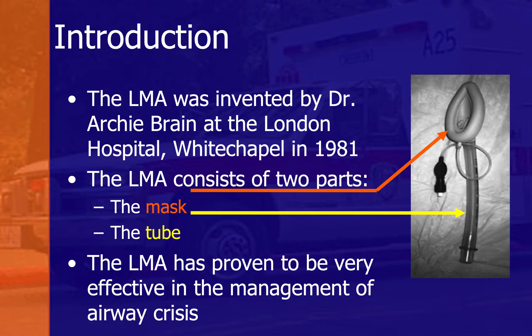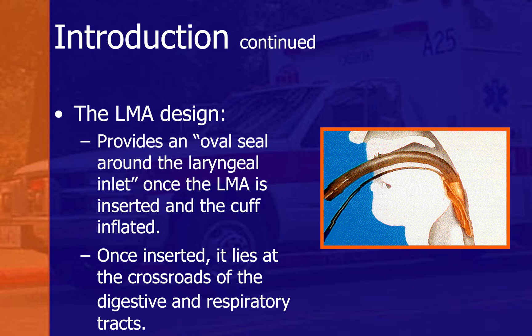The LMA has proven to be very effective in the management of difficult airway or airway crisis, even in severe cases. The LMA design provides an oval shape around the laryngeal inlet. Once the LMA is inserted and the cuff inflated, it guarantees proper ventilation compared to mask ventilation. Once inserted, it lies at the crossroad of the digestive and respiratory tract.